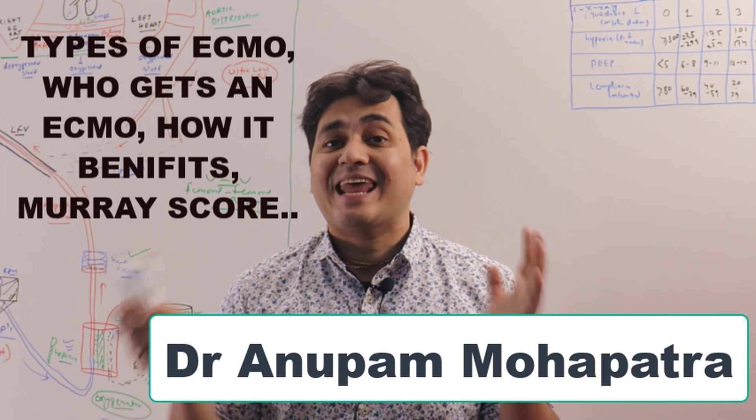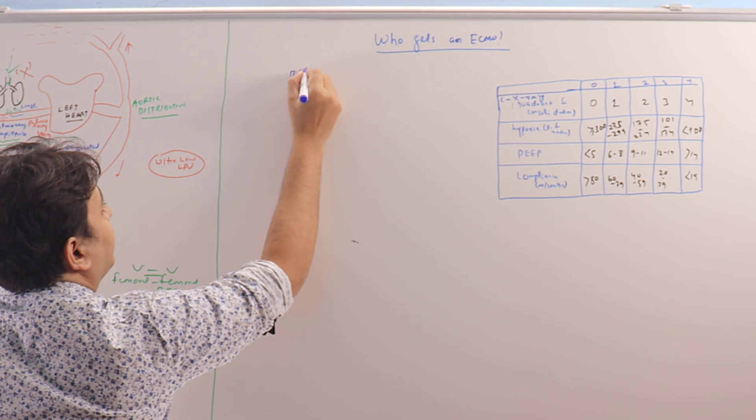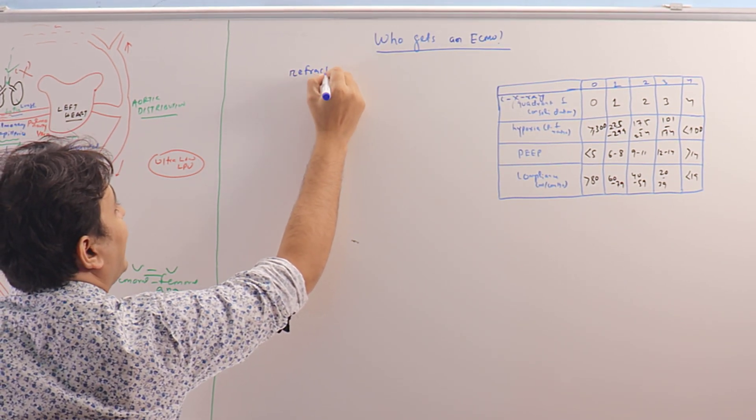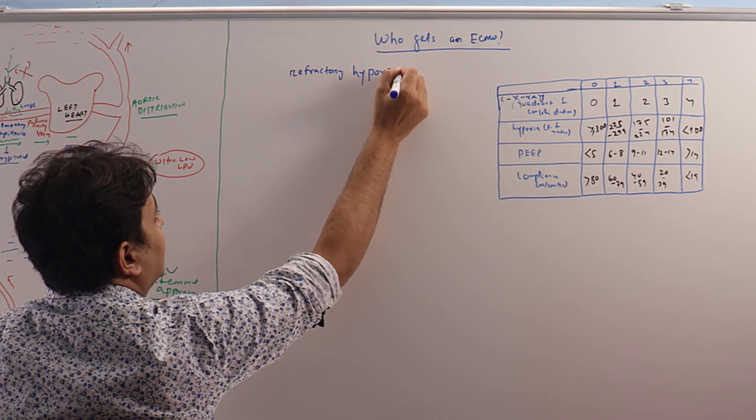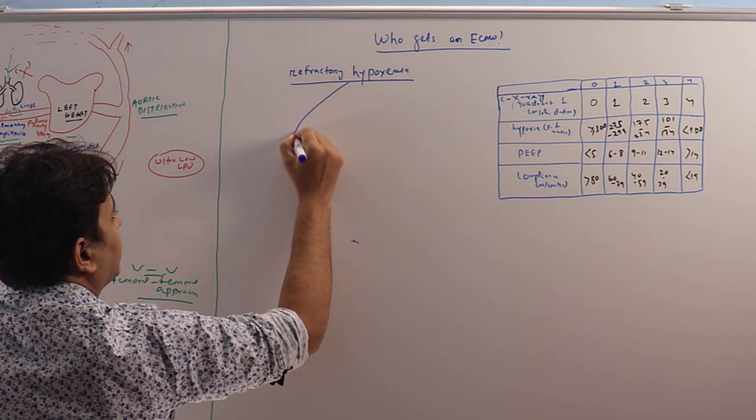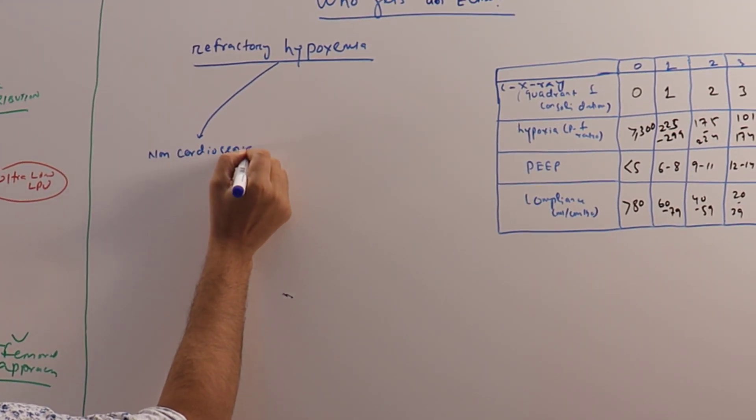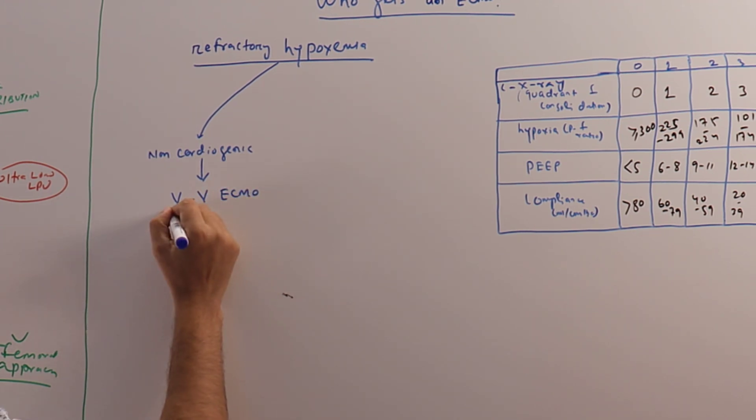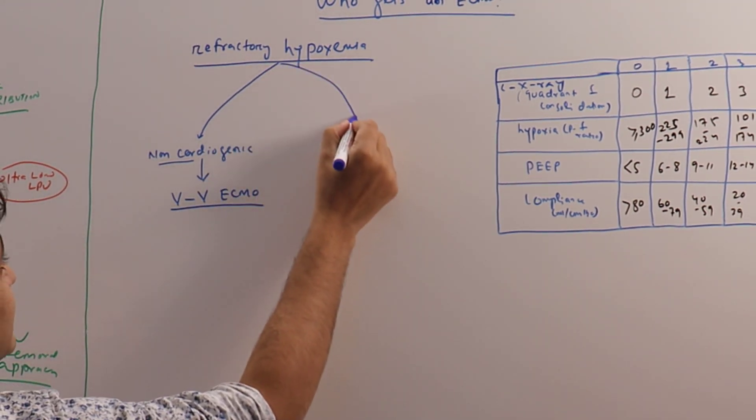So who gets an ECMO? Let us discuss. The only indication for ECMO in ARDS is refractory hypoxemia. If it is non-cardiogenic, we use veno-venous ECMO. You take the blood from one vein, put it in another vein that will take to the heart, and the heart, because it's working well, will pump the blood to the body.